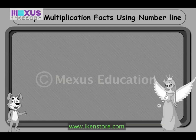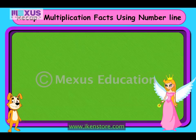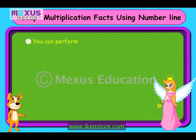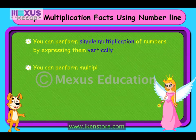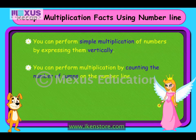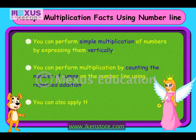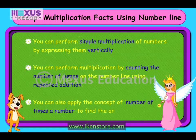Let's have a quick recap of what we've learned. You can perform simple multiplication of numbers by expressing them vertically. You can perform multiplication by counting the number of jumps on the number line using repeated addition. You can also apply the concept of number of times a number to find the answer.